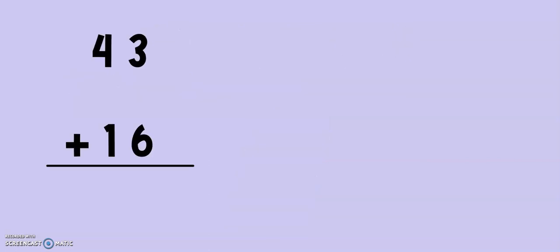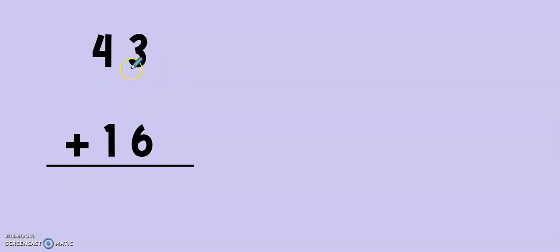This strategy involves us using our number drawings that we've been practicing in this unit. When we add, we are going to need to draw both numbers in our equation. So we need 43 and 16. Let's start with 43. I like to draw it right next to the number just to keep it nice and organized.